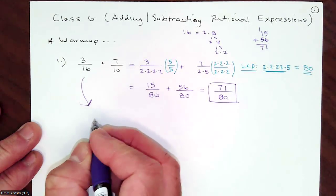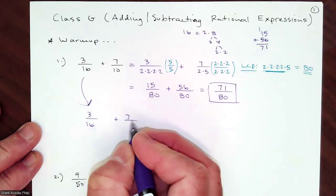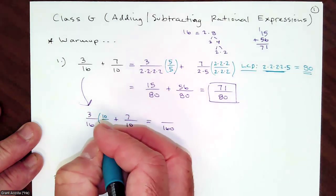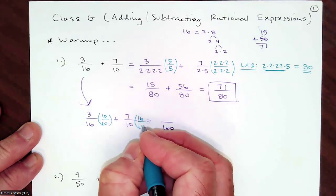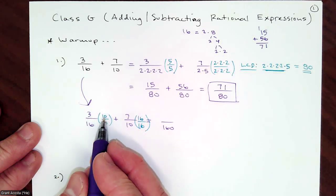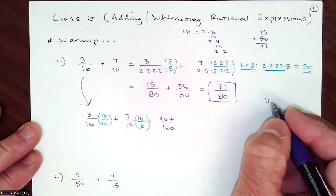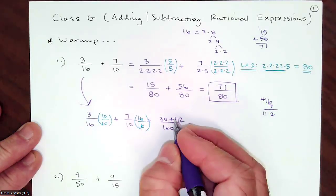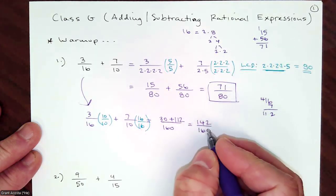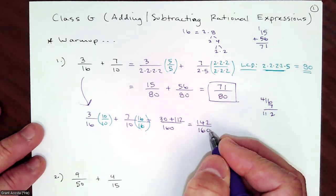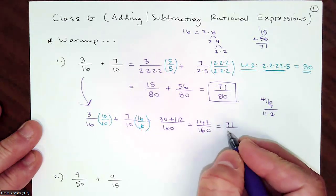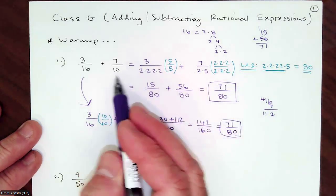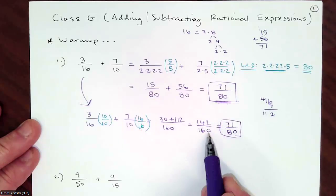You could also use 160 as a common denominator. Multiply top and bottom by 10 and 16 respectively, giving 30 over 160 plus 112 over 160, which is 142 over 160. Dividing top and bottom by 2 gives you 71 over 80 — the same answer. But you can see it's much easier to work with the lowest common denominator because the fraction is already reduced.